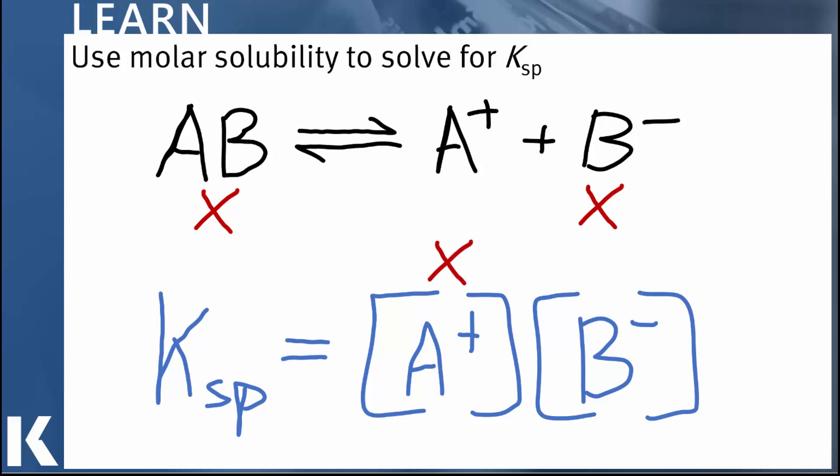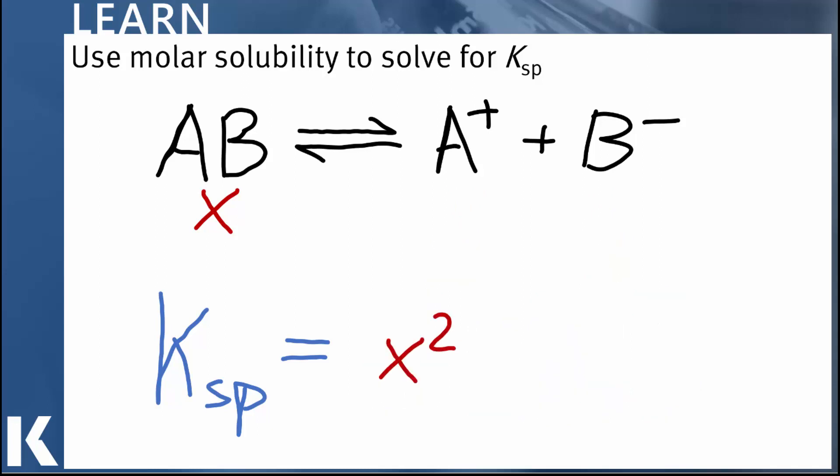If we plug those values into our Ksp expression, we'll just move them down there from the equilibrium down to the Ksp. What you can see is that the Ksp is equal to X squared. But recalling that X is the molar solubility, that means that the Ksp is molar solubility squared in this case. Not so bad.